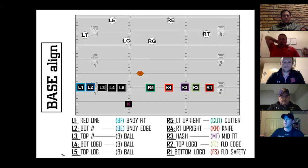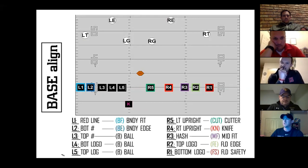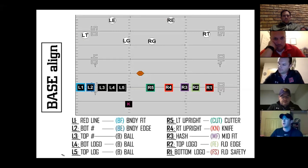Our L1 is going to be on the red line below the bottom of the numbers and the ticks to the sideline. Our L2 and L3 will vice the numbers, and our L4 and L5 will vice the logo — that magical area between the top of the numbers and the hash. In special teams it's really important, whether you're educating your staff or the kids, to know the width of the field landmarks so you can space your drills appropriately.